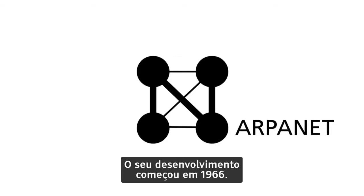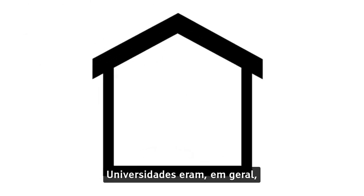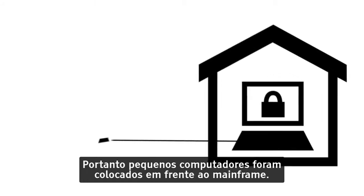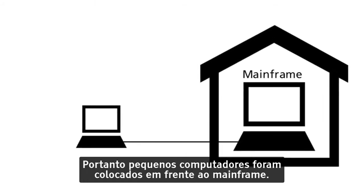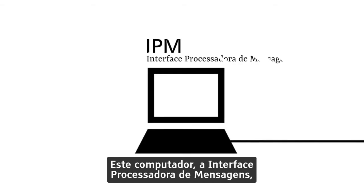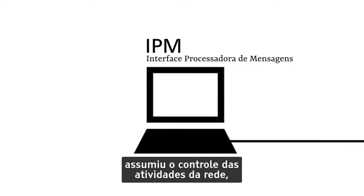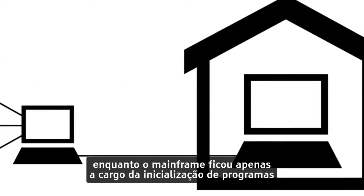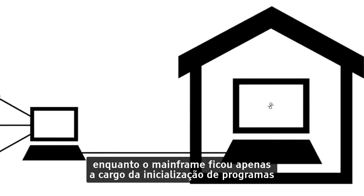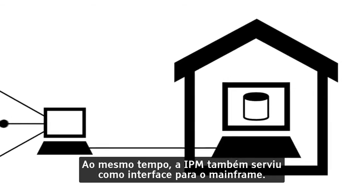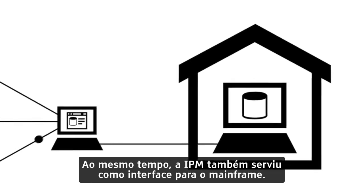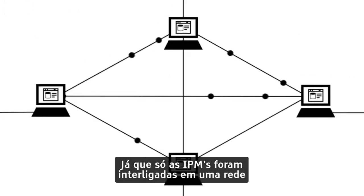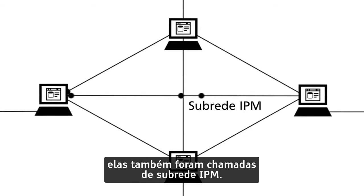ARPANET's development began in 1966. Universities were generally quite cautious about sharing their computers. Therefore, small computers were put in front of the mainframe. This computer — the Interface Message Processor — took over control of the network activities, while the mainframe was only in charge of the initialization of programs and data files. The IMP also served as an interface for the mainframe, and since only the IMPs were interconnected in a network, this was also called the IMP subnet.